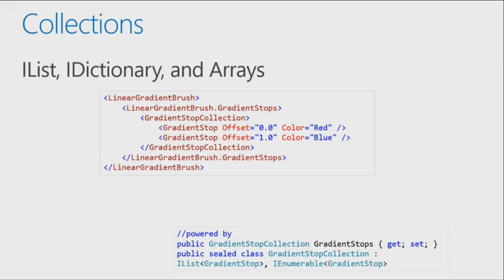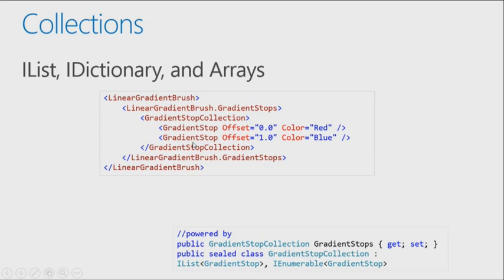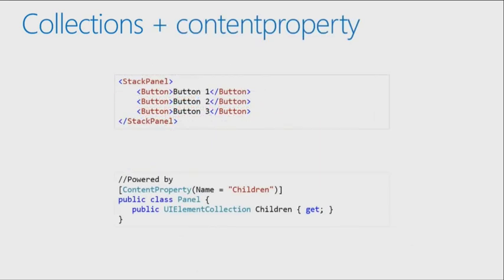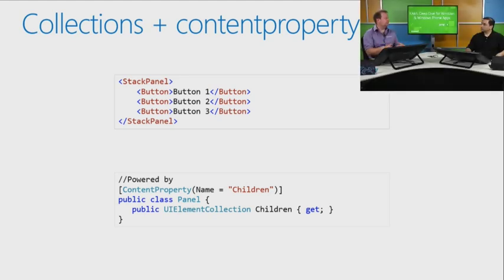We also have support for collections. For example, a LinearGradientBrush's GradientStops is actually a gradient stop collection — you'll see that the tool will generate all that for you. XAML can be used to serialize or deserialize any object. Later in this day, we're going to put some objects in XAML and use them as resources, which is very useful if you want to use those data objects with bindings. You can see the combination of the content property — the default property — with a collection where a StackPanel has a content property 'children' that is a collection.